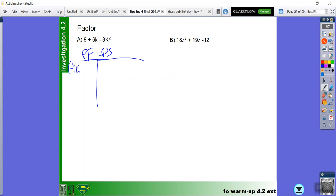And then something else, and then positive 2k. And then I knew that 3 times 3 was 9, so then I tried plus 3 and then plus 3, and then 3 plus 3 is 6k.